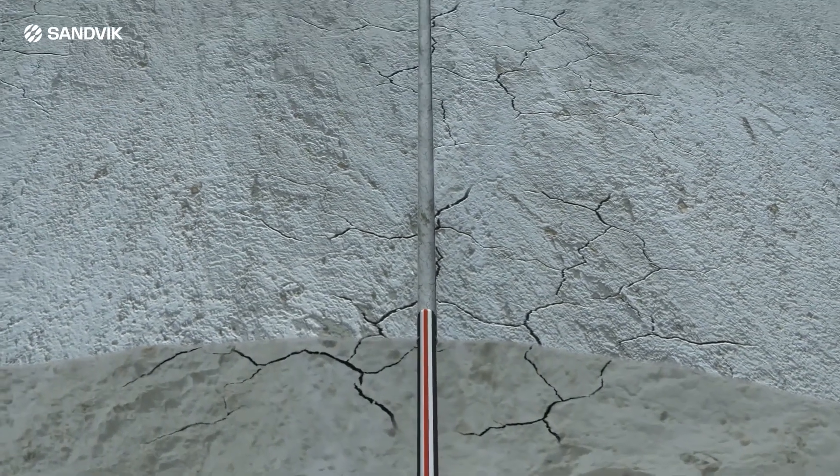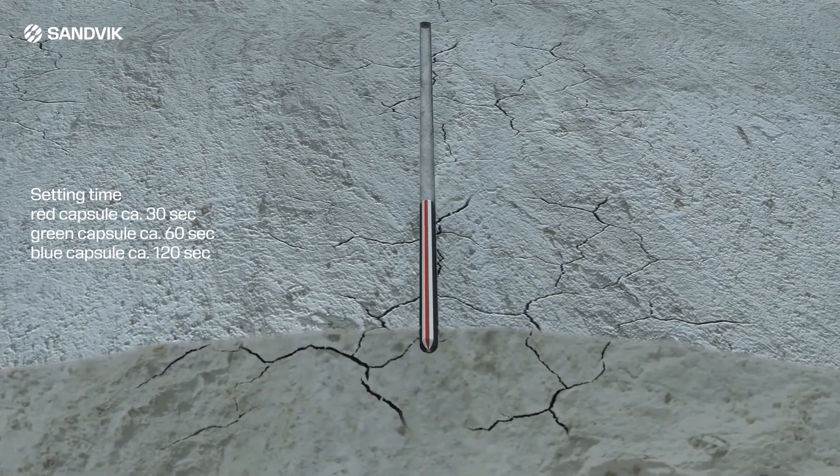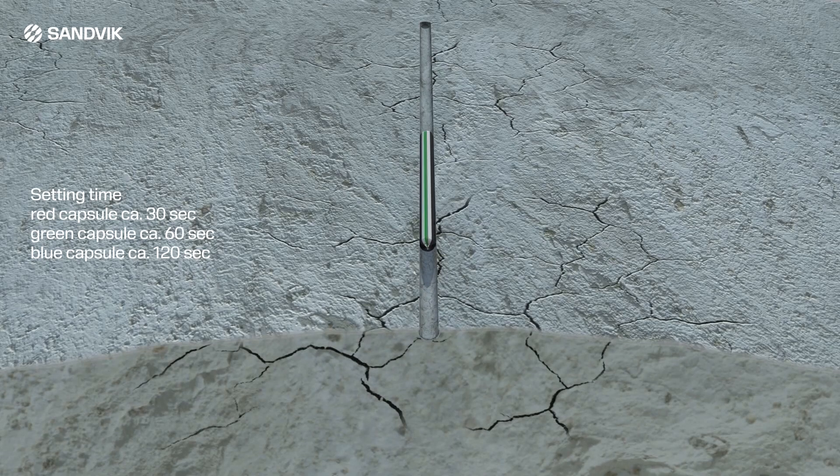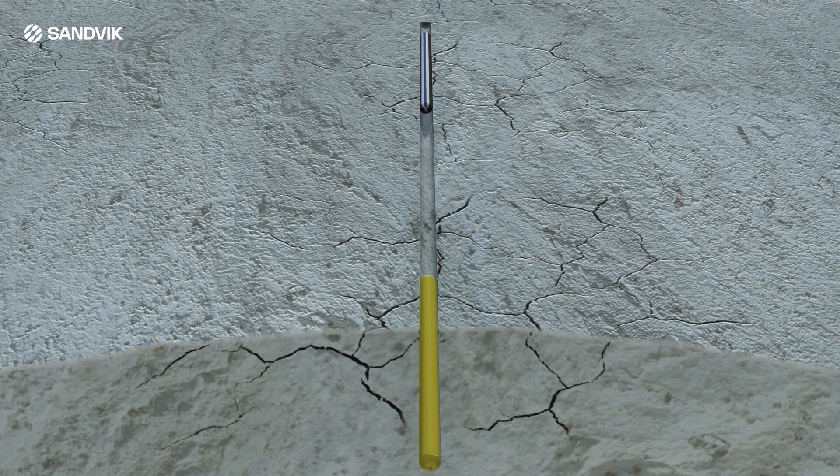Insert the fast capsule first. Red capsule is 30 seconds setting time, green capsule is 60 seconds setting time, and the blue capsule is 120 seconds setting time. Then followed by the slow setting yellow capsule.